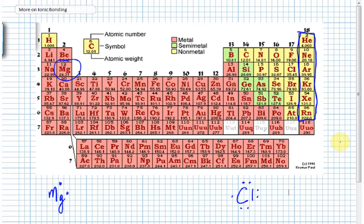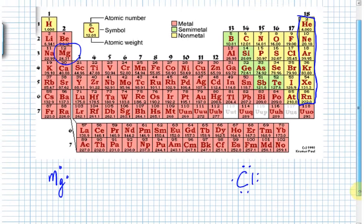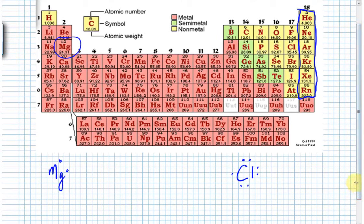These atoms bump into each other and as they do, magnesium is looking to unload two electrons. Chlorine is looking to pick up one electron. This appears to be a mismatch - magnesium wants to lose two, needs to lose two, chlorine can only gain one. But there's no reason we can't bring another chlorine into the game. Lots of atoms out there.